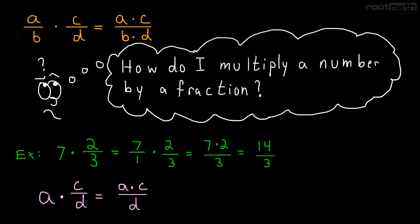And now if we just use this rule here that we derived, we'll have 7 times 2 thirds is just equal to 7 times 2 over 3, which of course is 14 thirds.